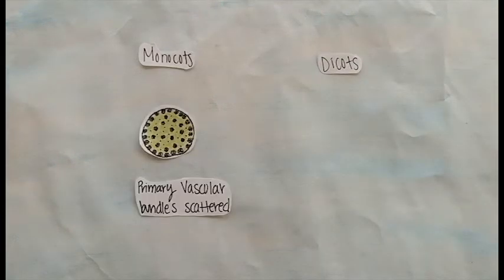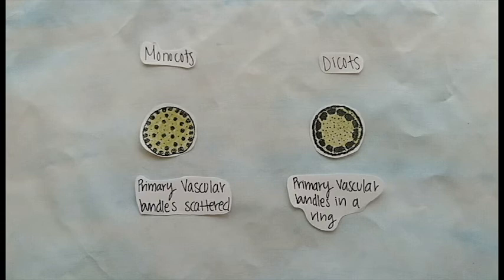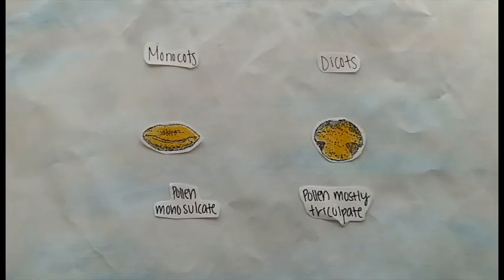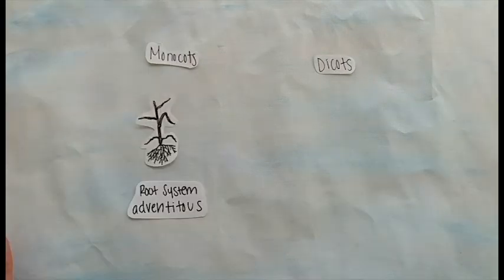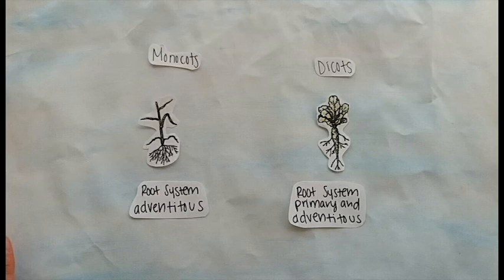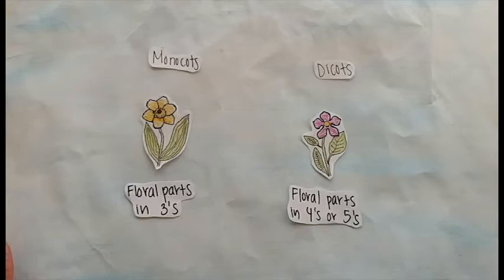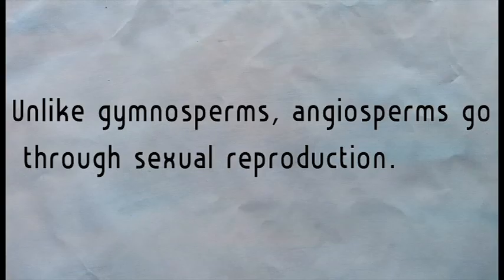The primary vascular bundles in a monocot are scattered; however, in dicots they are arranged in a ring. Monocot plants' pollen are monosulcate. Dicot plants are mostly tricolpate. The root systems also differ: monocots have an adventitious root system, while dicots have a primary and adventitious root system. Floral parts come in threes for monocots and in fours and fives for dicots.